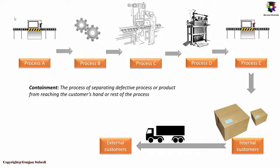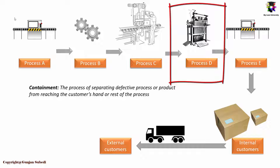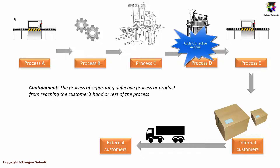We will study about this in the D0 phase of the root cause analysis. Now, we have already spotted the problem through internal or external customers and contained or sealed the source of the problem. Now we need to find out the root cause. Any one of these processes or all of them could be the source of the problem. Suppose we found out that the root cause is process D — so we contain only process D and we have corrective actions applied at process D.